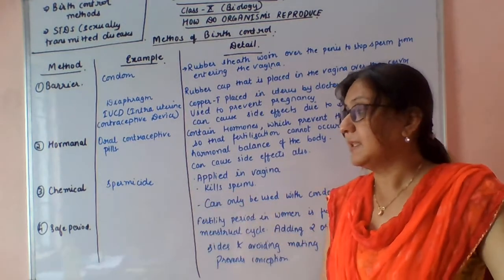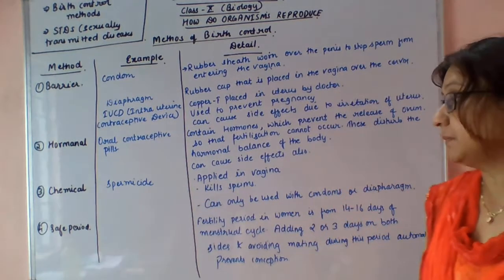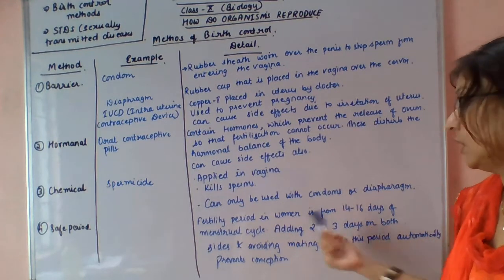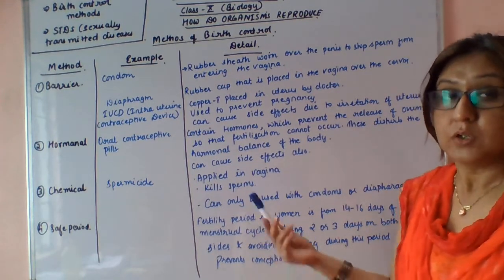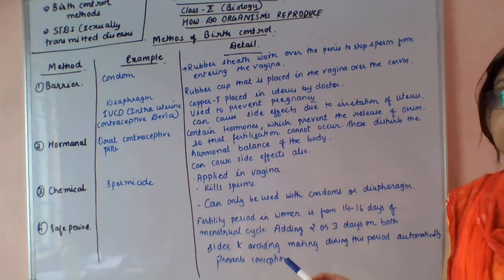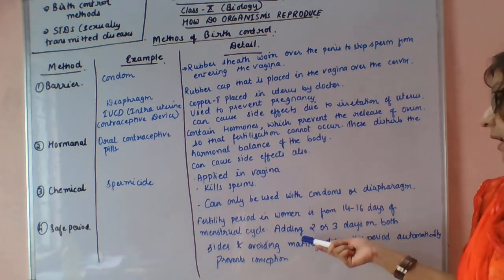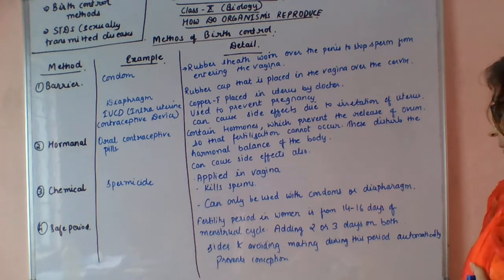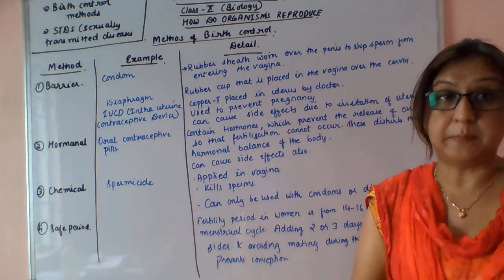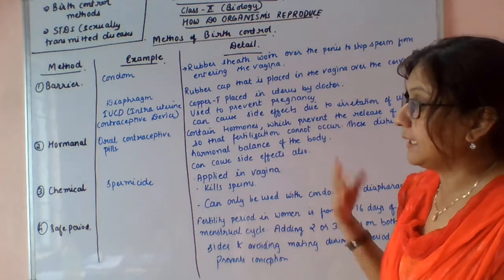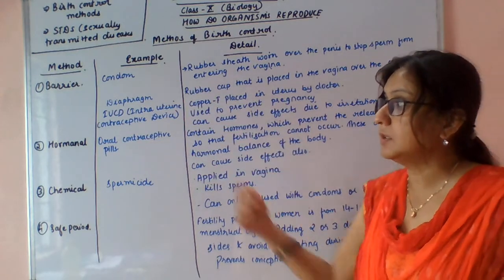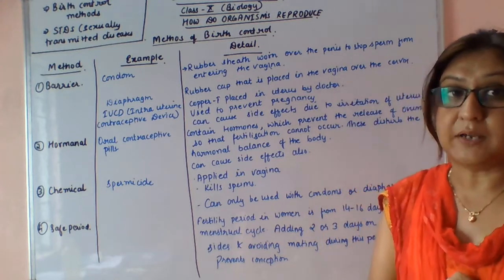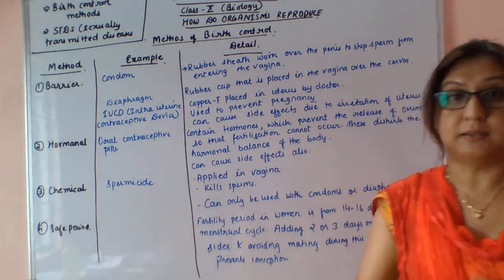The next method is the safe period. The fertility period of a woman is from day 14 to 16 of the menstrual cycle. Adding two or three days on both sides and avoiding mating during this period automatically prevents conception. So, the four methods are: barrier methods, hormonal methods, chemical methods, and the safe period.